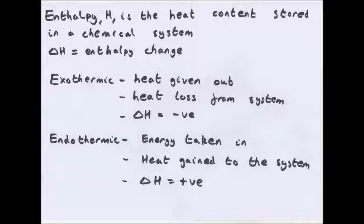The important thing about energy is that it is always conserved — energy can never be created or destroyed, it's only transferred. So if you lose heat from a chemical system, the surroundings gain the heat, and if the chemical system gains heat, heat is lost from the surroundings. Delta H — the triangle next to the H — is what we call enthalpy change, which is a change in heat content of a system. There are two types of reaction: exothermic and endothermic.